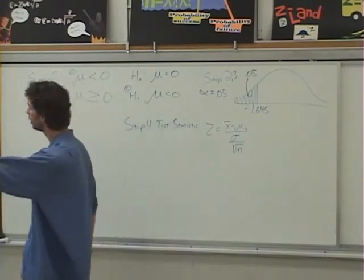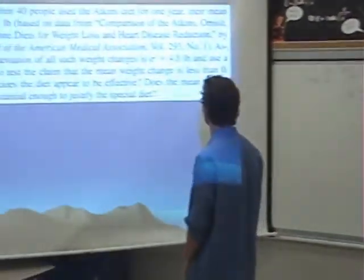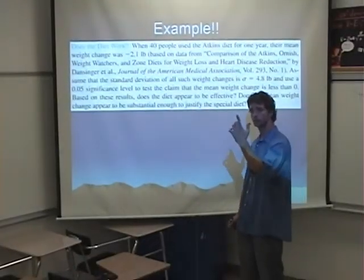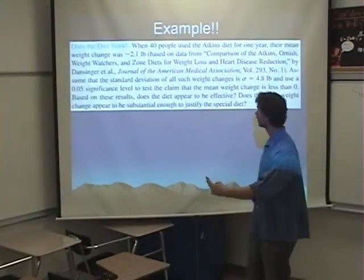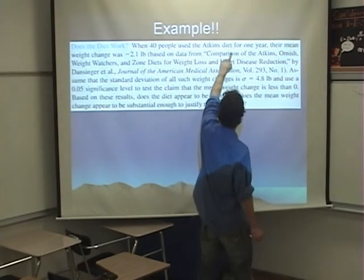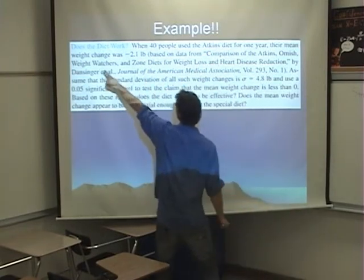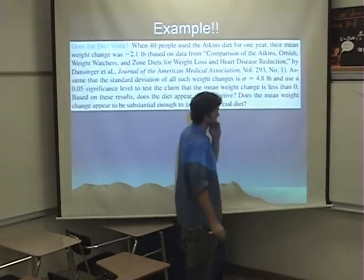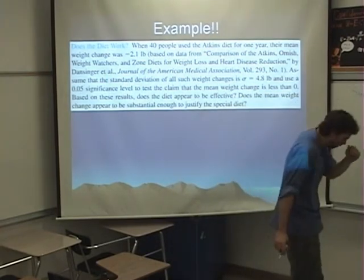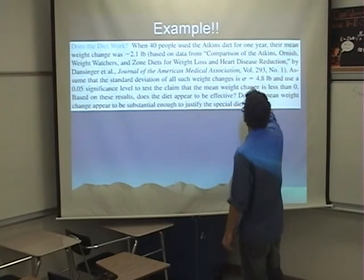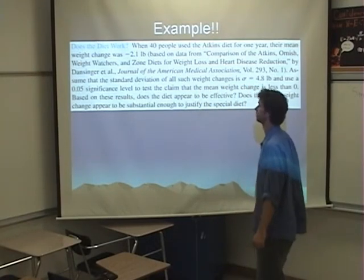So if we come back over here to the problem we can get all that information. We need to know x-bar and we need to know sigma. We need to know x-bar and we need to know sigma. So we go through here and we find when 40 people use the Atkins diet for one year their mean weight change was negative 2.1 pounds.